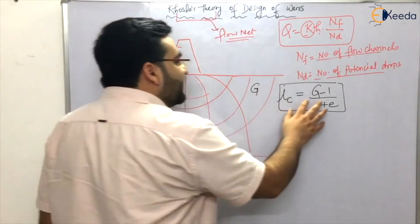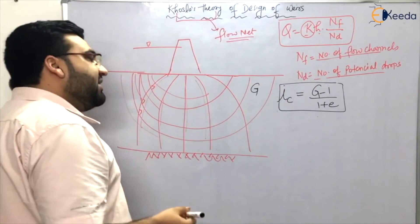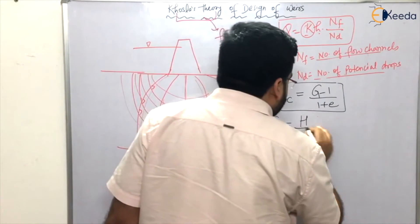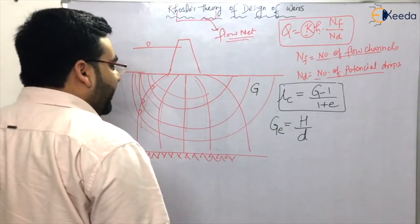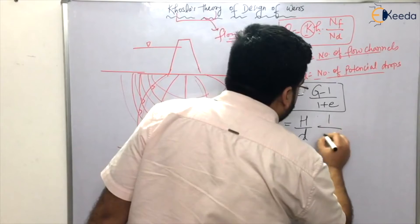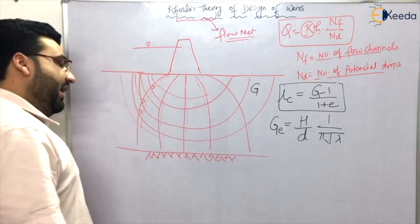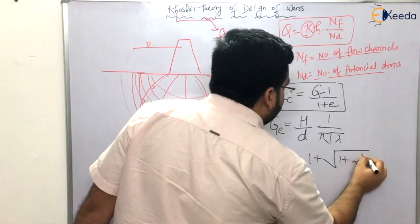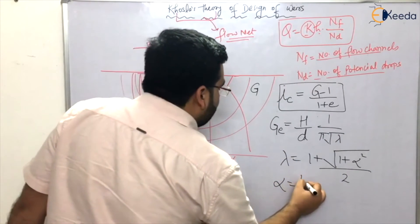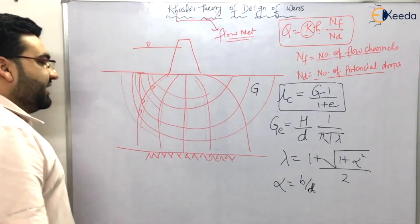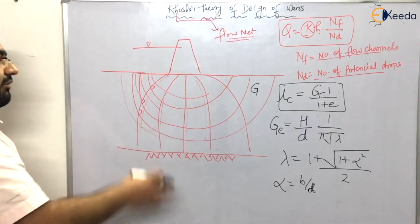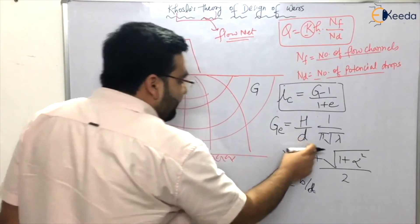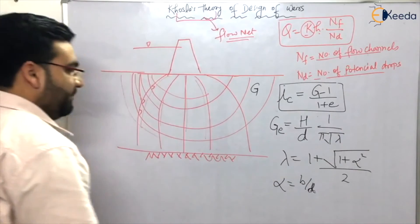Critical gradient is given by (G - 1) / (1 + e), and Khosla said that the exit gradient GE or iE is actually given by (h/d) × (1/π) × √(1/λ), where λ = (1 + √(1 + α²)) / 2, and α = b/d. Here d is the depth of the downstream pile, b is the width of the structure, h is the head, and d is the depth.